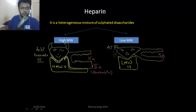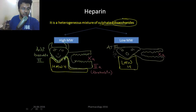Next is Heparin. Heparin is an anticoagulant. It is made up of sulfated disaccharide — mind well, it is disaccharide, not polypeptide. Two forms of Heparin are available: high molecular weight Heparin and low molecular weight Heparin.